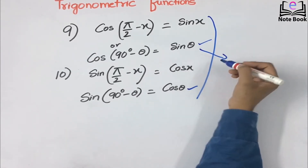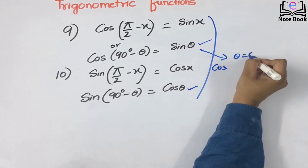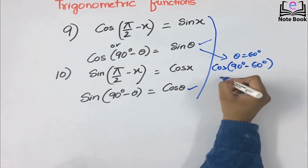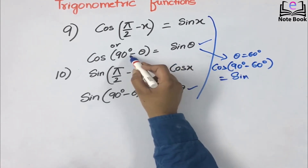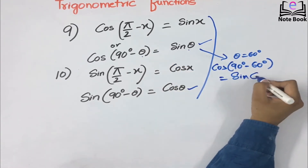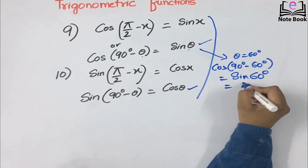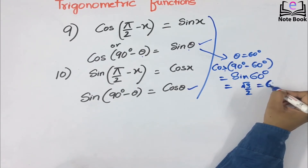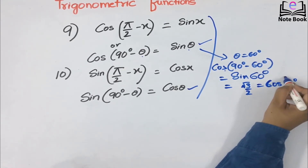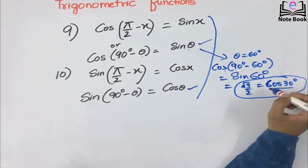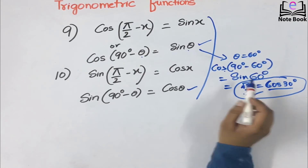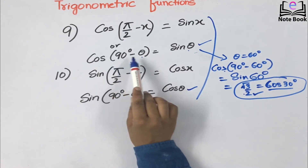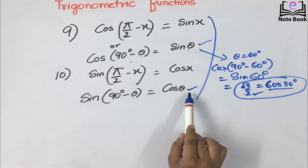Let's look at a small example. Take θ = 60°. So cos(90° − 60°) equals, by the formula cos(90° − θ) = sin θ, we get sin 60° = √3/2. Checking directly, cos(90° − 60°) = cos 30° = √3/2, which we can confirm from our table. So this verifies the formula. Remember: cos(90° − θ) = sin θ and sin(90° − θ) = cos θ are very important.